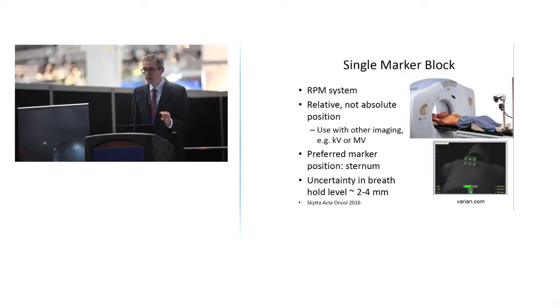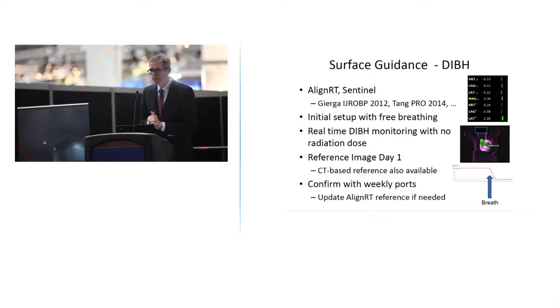Then we can use the full surface from the AlignRT product or other products like the Sentinel product. I've just listed a couple of publications here from our group and also from the North Carolina group. What we do is we have two reference images: the initial setup image under normal breathing conditions and then the reference image for the breath hold. So first the patient is put in a position to take a breath and then we monitor the patient to make sure that they then take a breath. Of course there's no radiation dose here. You can see the image here and the dark purple area is the region of interest that we're registering.